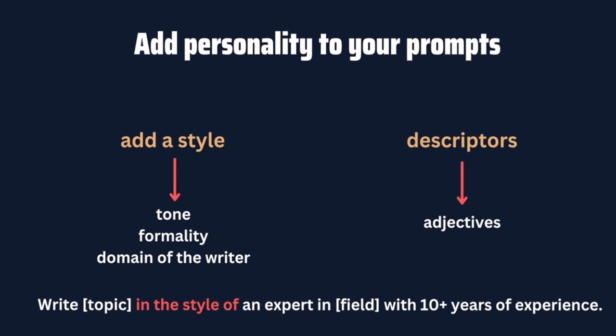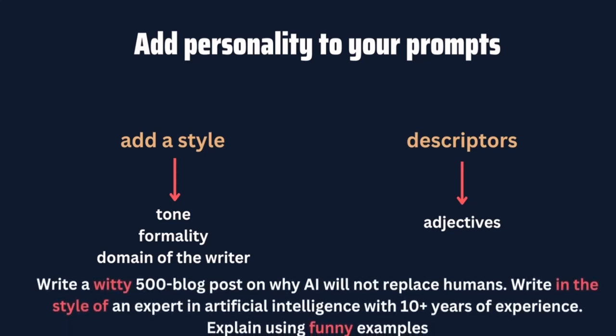For a 500-word blog post on 'how AI will replace humans,' a standard prompt gives generic output. But adding adjectives like inspiring, sarcastic, intriguing, and entertaining significantly changes the output. In our example, we add the descriptor 'witty' and 'explain using fun examples,' plus a style: 'in the style of an expert in AI with 10 years of experience.' A side effect is that this text is harder for AI detectors to identify.